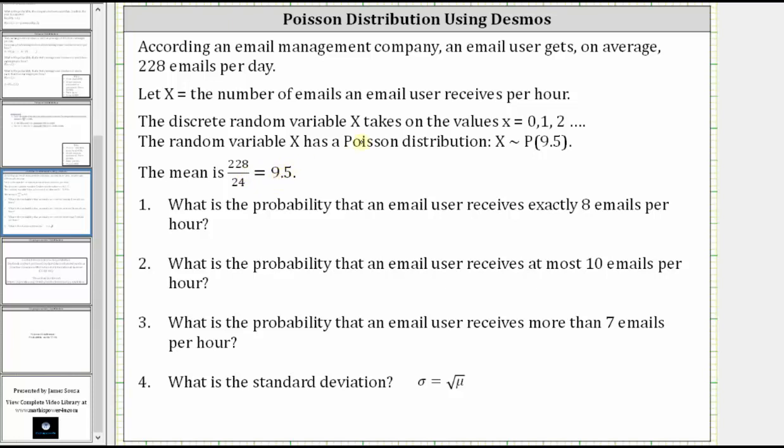Number one: what is the probability that an email user receives exactly eight emails per hour? This would be the probability that x is equal to eight.